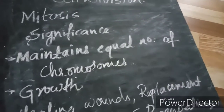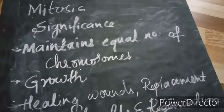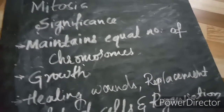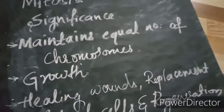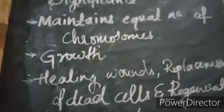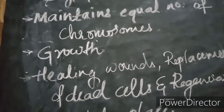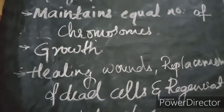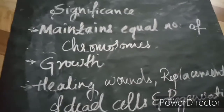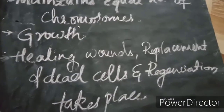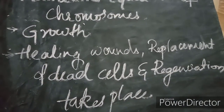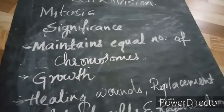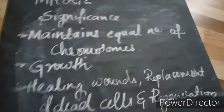The significance of mitosis: it maintains equal distribution of chromosomes between the two daughter cells. Mitosis helps in the growth of multicellular animals and plants. It also helps in wound healing, replacement of dead cells, and regeneration.